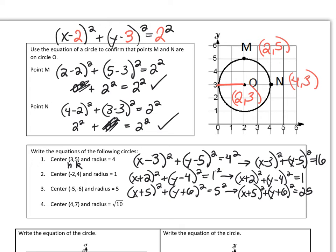Are you starting to get the hang of it? This time we had a negative 5 and a negative 6. So we have x plus 5 squared plus y plus 6 squared equals 25.